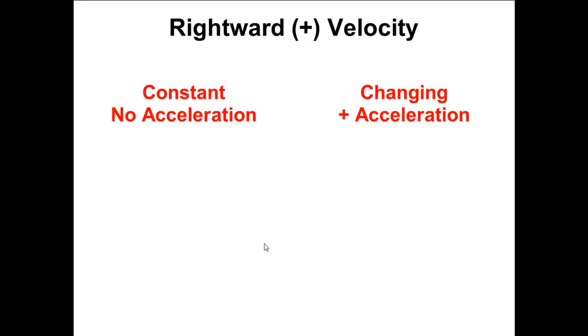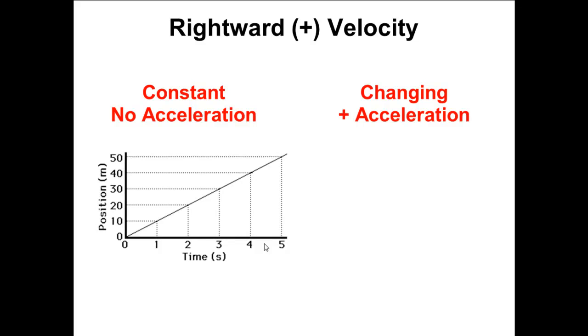I want to look at a few more graphs here before we close down for the session. And let's just get right into it. Anytime I have rightward velocity, I have a PT graph. We're looking here at I am in the positive zone here. Positive velocity, I am moving away from where I started.